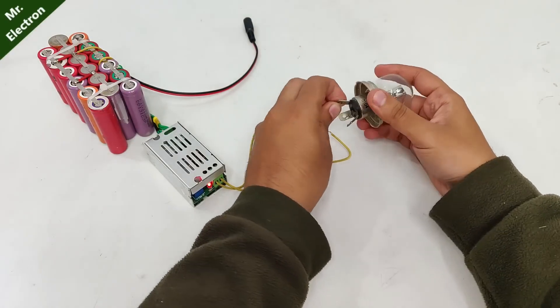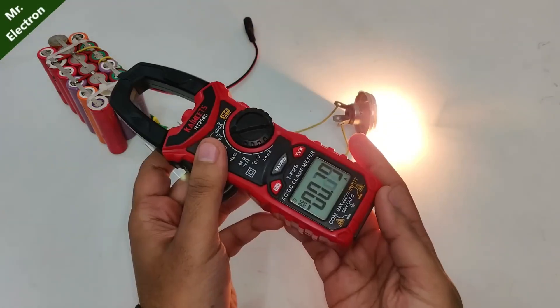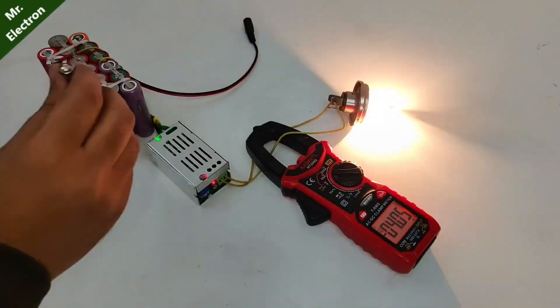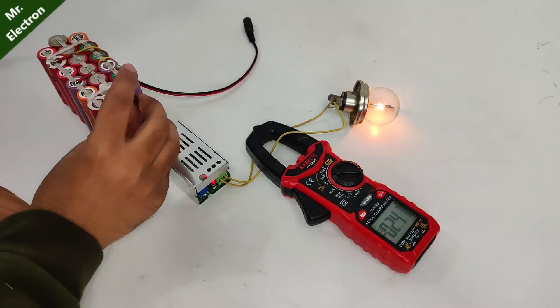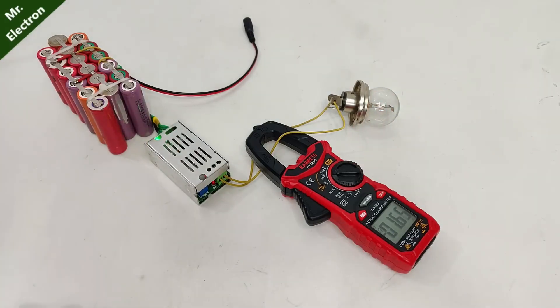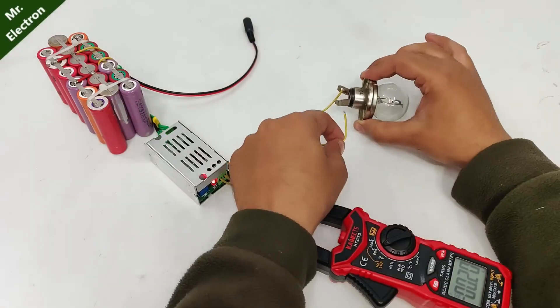Now take a clamp meter and measure the current. You can see 4 amperes, so let's bring it down. Yeah, so here I have reduced the current to 1.6 amperes, because of which the bulb has stopped glowing.